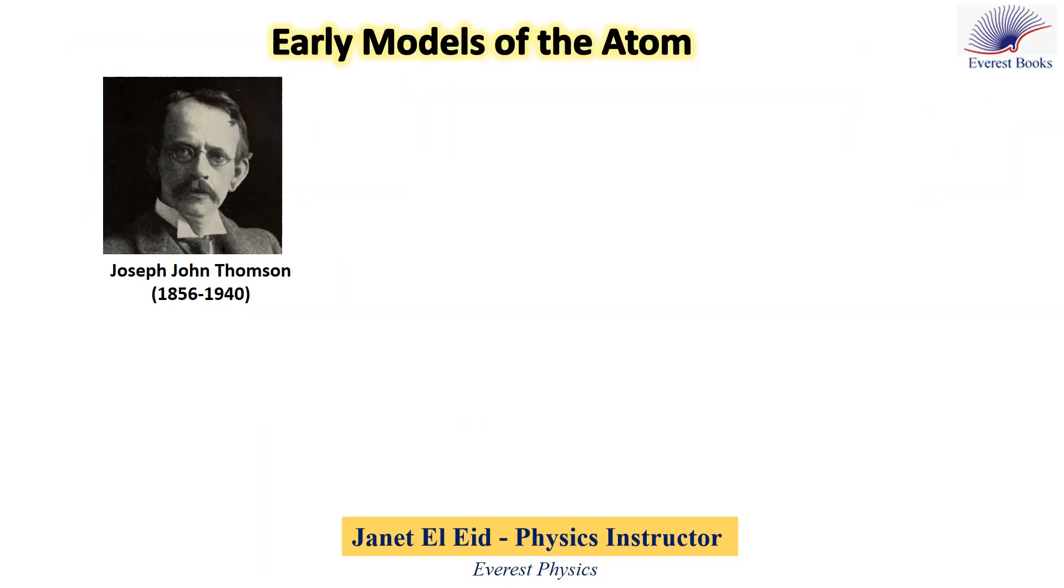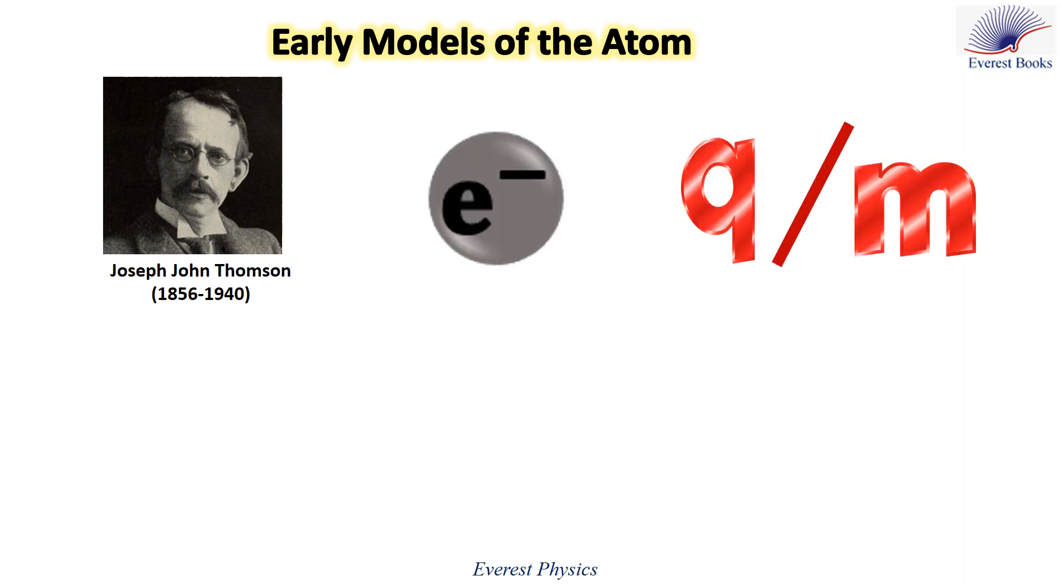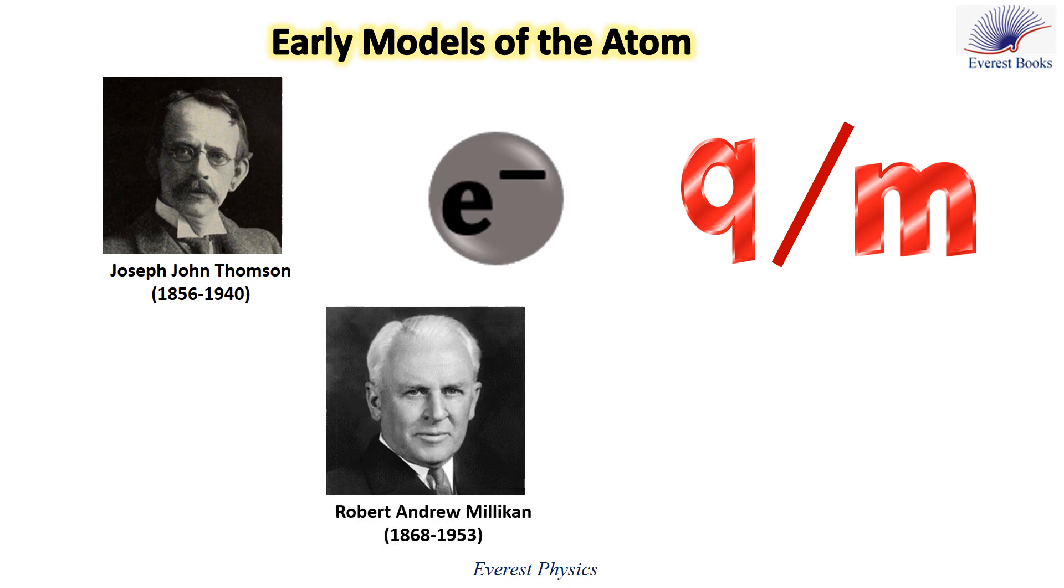In 1879, Thomson discovered the electron and measured its charge to mass ratio, Q over M. In 1909, Millikan performed the oil drop experiment and determined the electric charge and the mass of the electron.